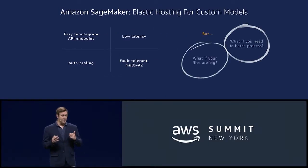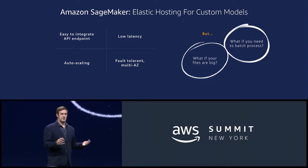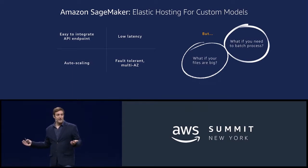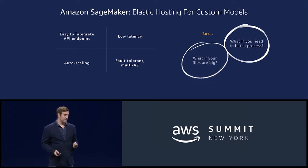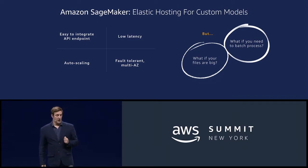But there are some situations where customers want to process a whole bunch of data all at once up front in batch, or where they have very large files — such as medical imaging files or 5K video — where they want to process a big file all at once. Customers want more flexibility to handle batch and large files. So today we're introducing a new feature of SageMaker which we call Batch Transform.